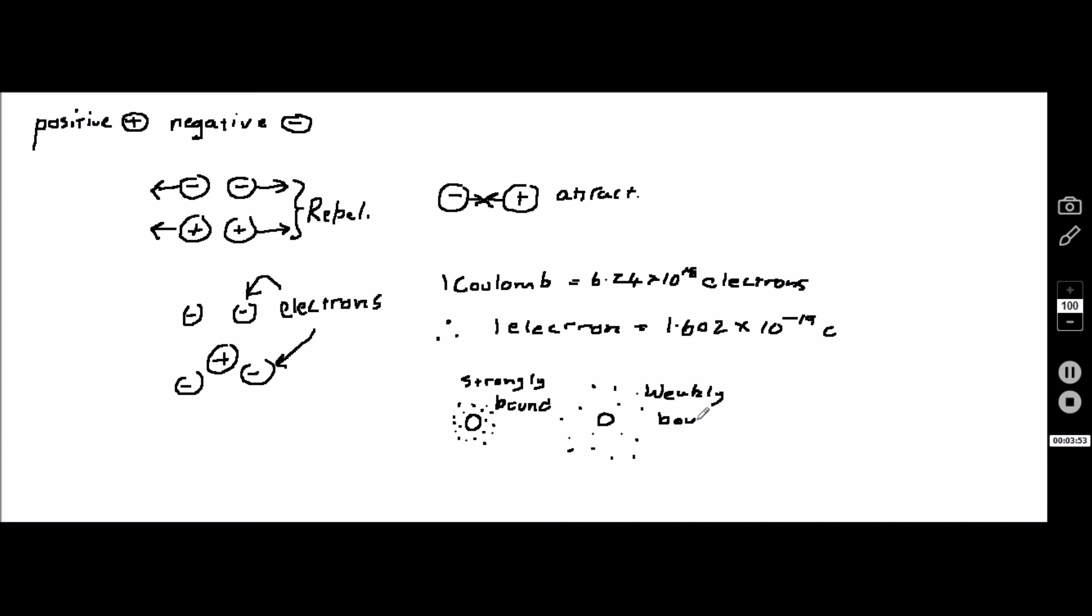On the other hand, conductors allow electricity to flow because the electrons are less strongly bound to the center and are free to move. You can see conductors and insulators in this quick sketch of the periodic table. This means you can charge up an insulator but not a conductor, because the charge will flow away.